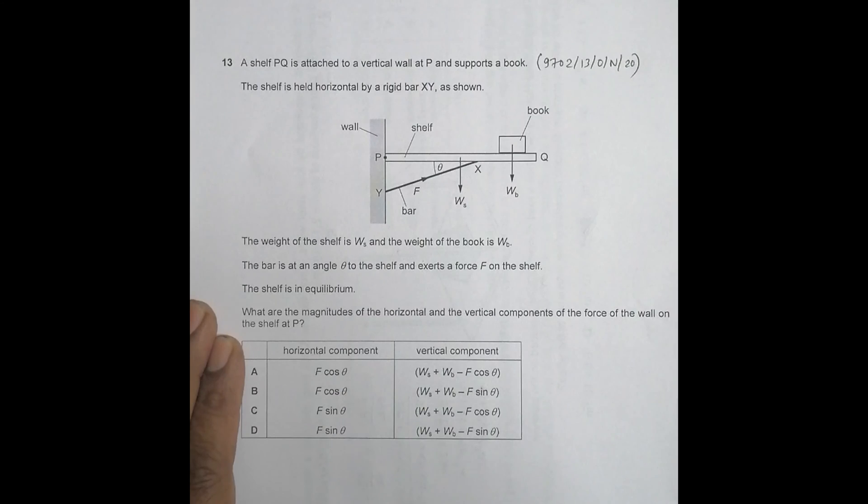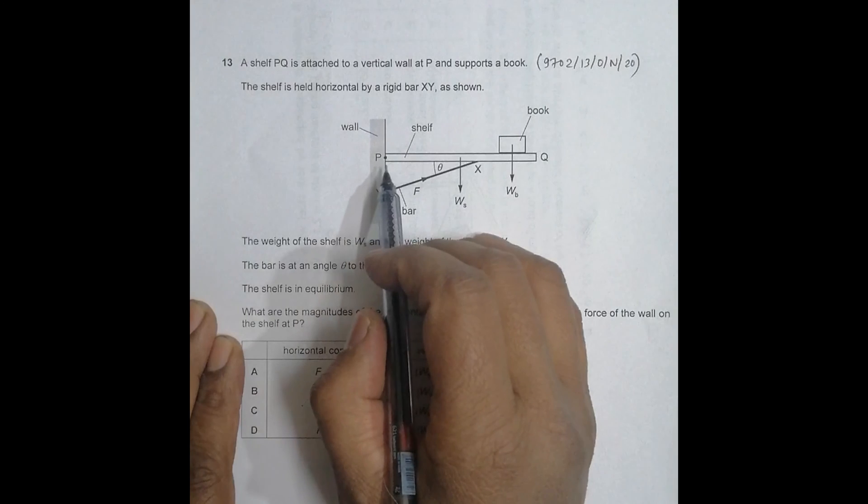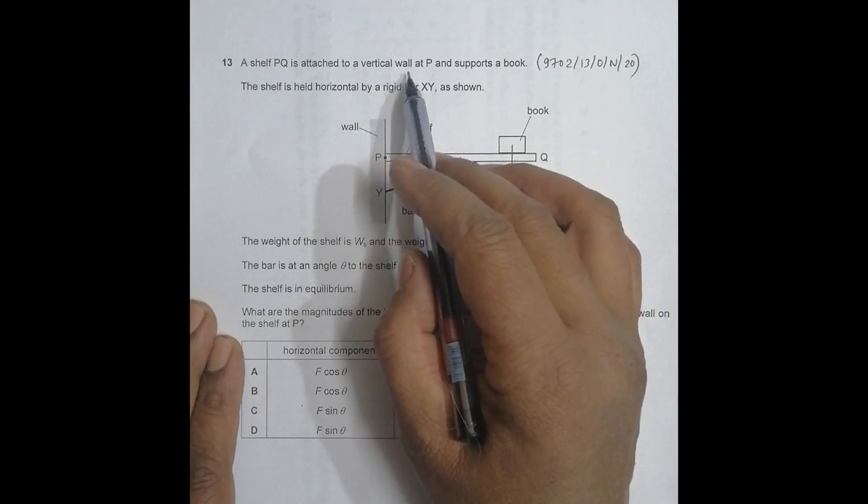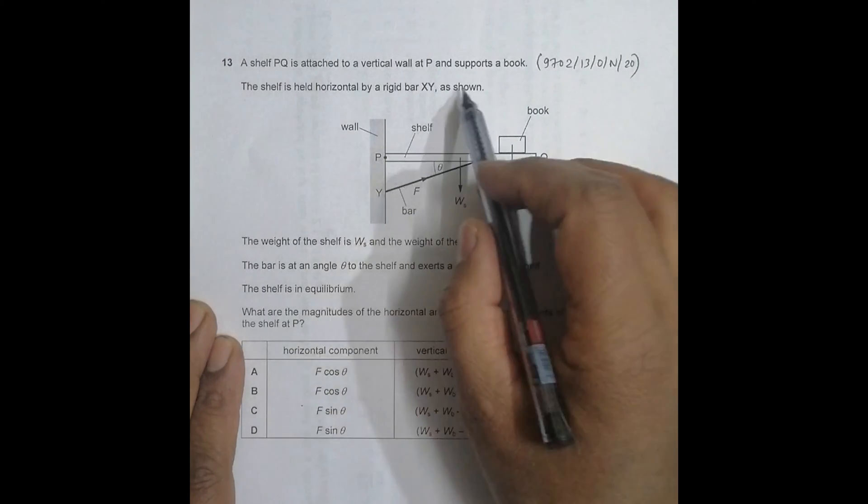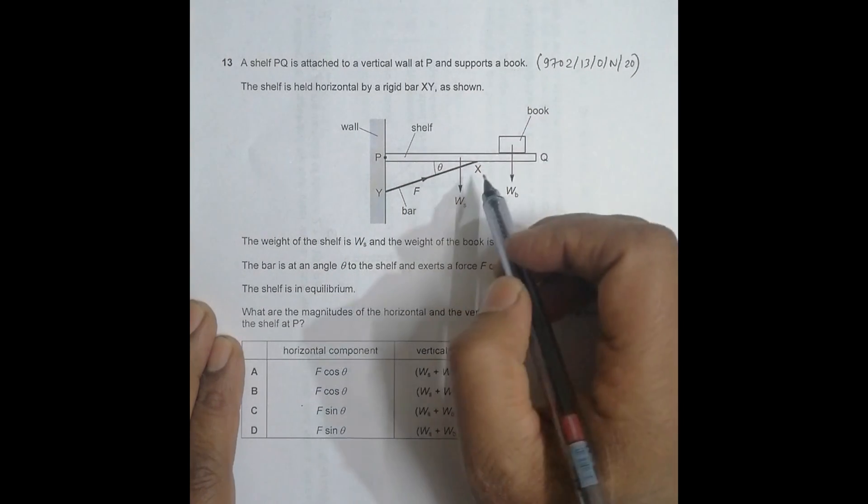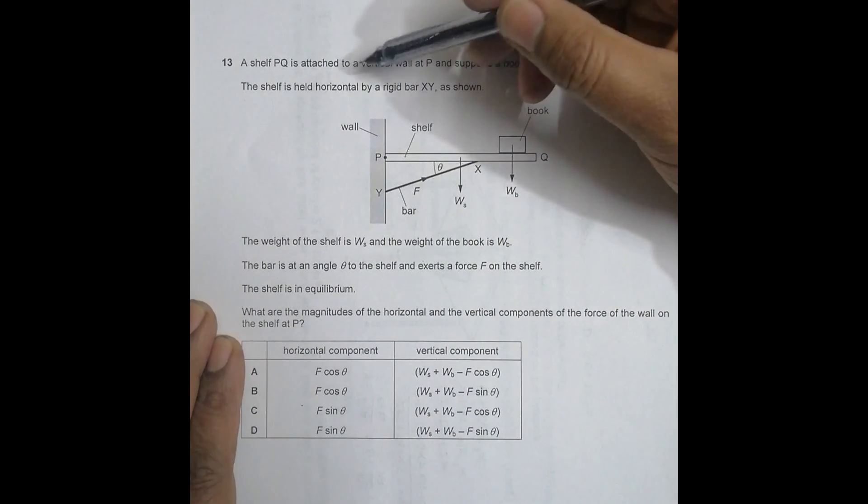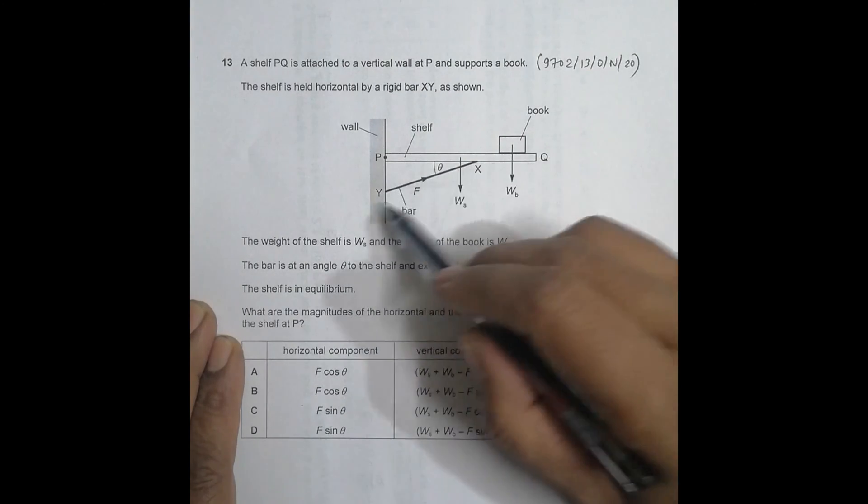This problem involves torque, actually moments. It says a shelf PQ is attached to a vertical wall at P and supports a book. The shelf is held horizontal by rigid bar XY.